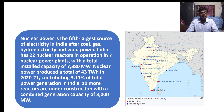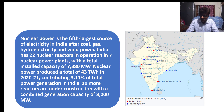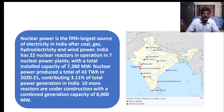Nuclear power produced a total of 43 terawatt-hours in 2022. In 2021, it produced around 3.11 percent of total power generation in India. Additionally, 10 more reactors are under construction with a combined generation capacity of 8,000 megawatts, which will nearly double the current capacity.